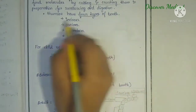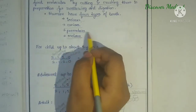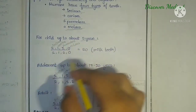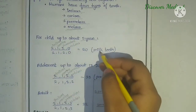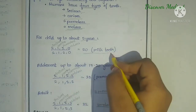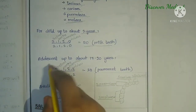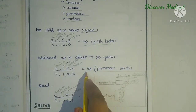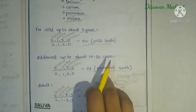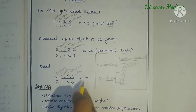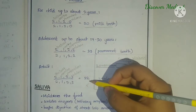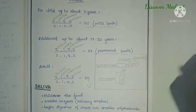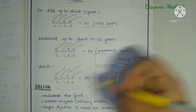Humans have four types of teeth: incisors, canines, premolars, and molars. For children up to about two years, the formula gives 20 milk teeth. For adolescents up to about 17 to 20 years of age, they have 28 permanent teeth. For adults, there are 32 teeth in total, including both milk teeth and permanent teeth.